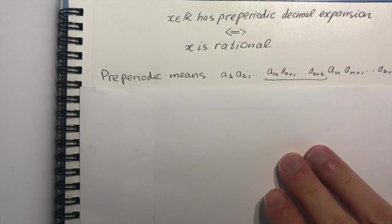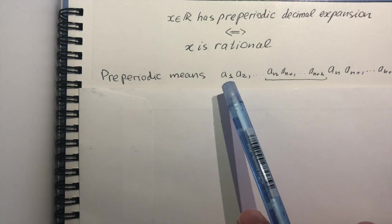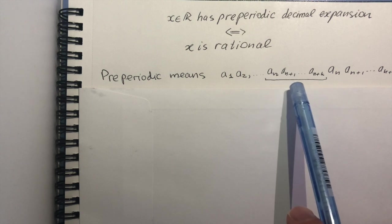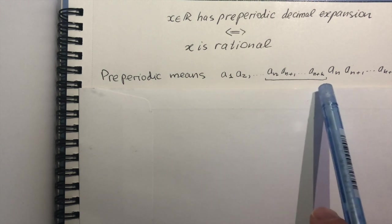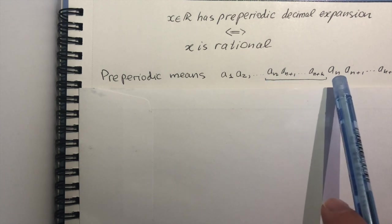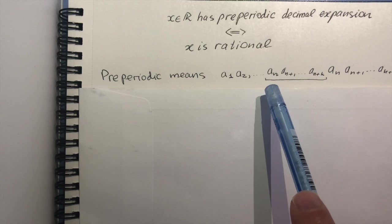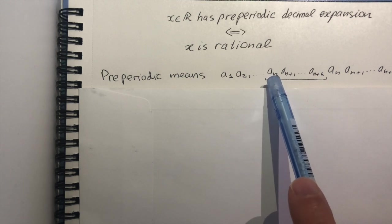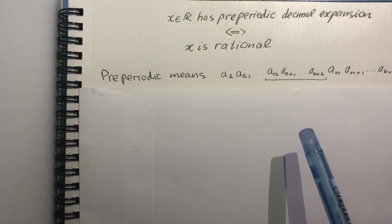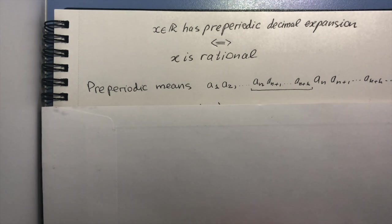Now what does the term preperiodic mean? It means that the decimal expansion of this number can begin with any numbers you like, but then at some point there will be a k-tuple—k can vary from number to number—there will be a k-tuple of numbers that will start to repeat. So these first n minus 1 numbers, a₁, a₂ to aₙ₋₁, can be any numbers, but then aₙ up to aₙ₊ₖ will cycle, will appear again and again in our expansion.